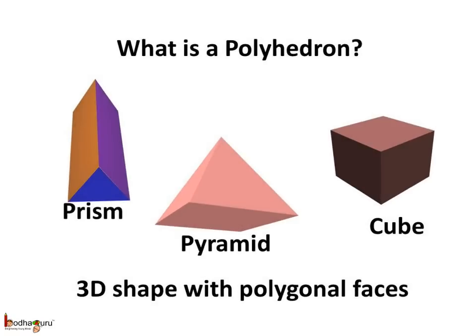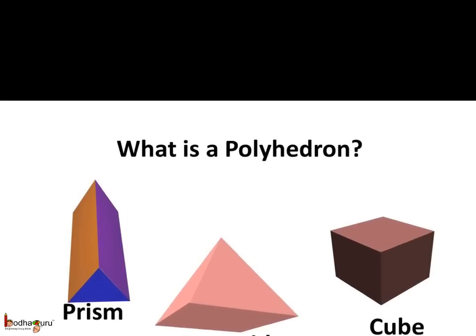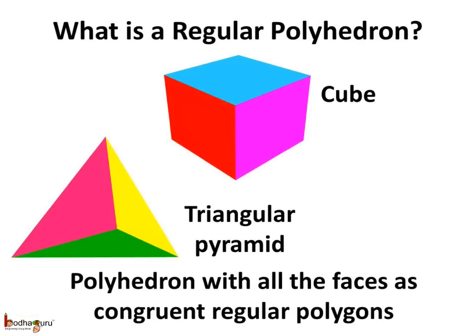To sum up what we learned today: what is a polyhedron? In short, it is a 3D shape with polygon faces, meaning it is a 3D shape where each face is a polygon — that is, each face is flat with straight edges. And what is a regular polyhedron? A polyhedron with all the faces as congruent regular polygons, meaning all the faces are of the same type of regular polygon, is called a regular polyhedron.